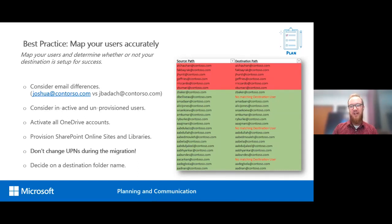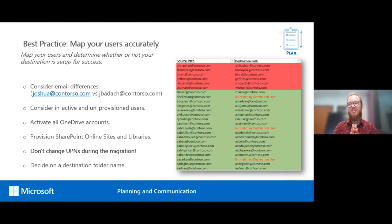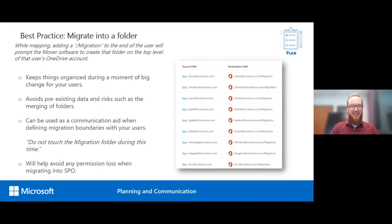Don't change your UPNs during the migration — if you're planning on changing them, do it before or wait until after. We also recommend deciding on a destination folder name: put migrated data into a destination folder added to the end of the path on the destination side. This keeps pre-existing data separated from migration data, and you can communicate to users 'don't touch the migrated from Box folder until this date' so it doesn't interfere with the delta pass.